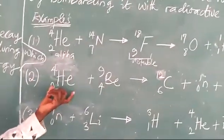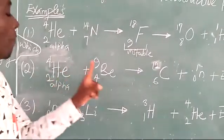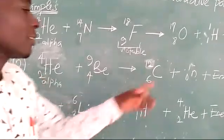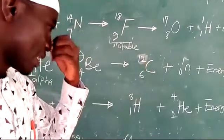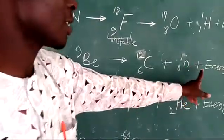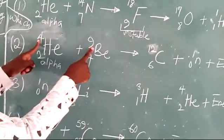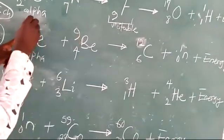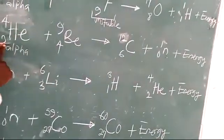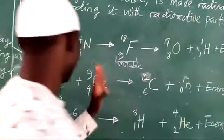The second example: again we have an alpha particle. A helium nucleus is used to bombard an atom of beryllium with a mass of 9 and atomic number 4. This yields carbon-12, carbon with a mass of 12 and atomic number 6, and then a neutron is released, plus energy released to the surrounding. If you add 4 to 9, this will give you 13 — the total mass you have here is 13. On this side, you have 12 plus 1 equals 13. Here, 2 plus 4 is 6, and 6 plus 0 is 6. So this is balanced.